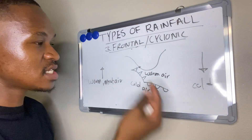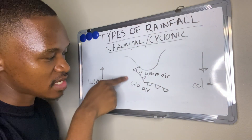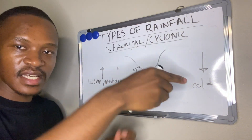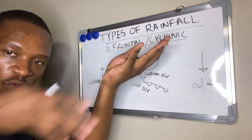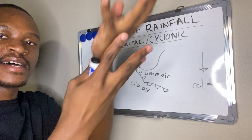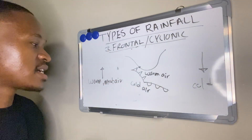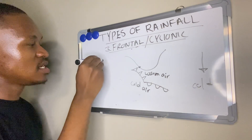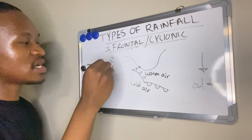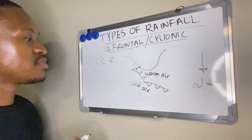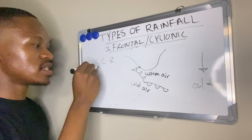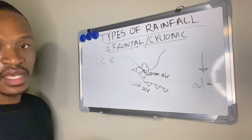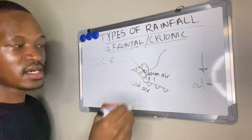Cold dry air sinks and undercuts or pushes the warm air to rise. When the warm air rises, we apply the Triple C-R: it cools and condenses to form clouds, and clouds bring about the rainfall. That is how frontal or cyclonic rainfall works — cold air forces warm air upward, triggering cloud formation and precipitation.